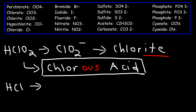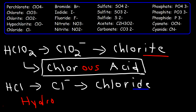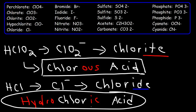Now what about HCl? If we remove the hydrogen atom, HCl becomes Cl⁻, and the name for that is chloride. If the ion ends with the suffix '-ide', you need to add the prefix 'hydro', the suffix '-ic', and then the word 'acid'. So this is going to be called hydro... and then instead of chloride, it's chloric acid. So that's how you write the name for HCl — it's hydrochloric acid.